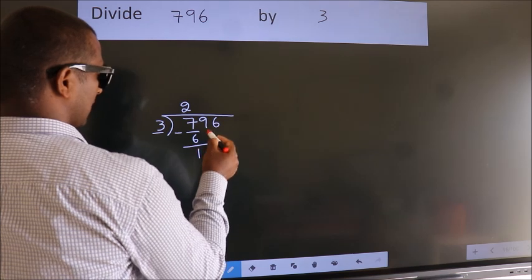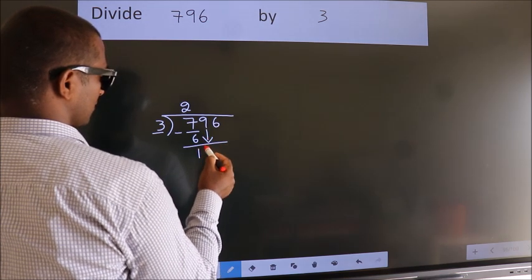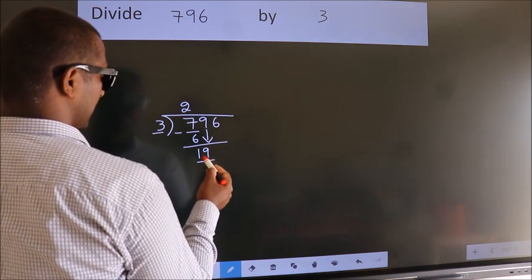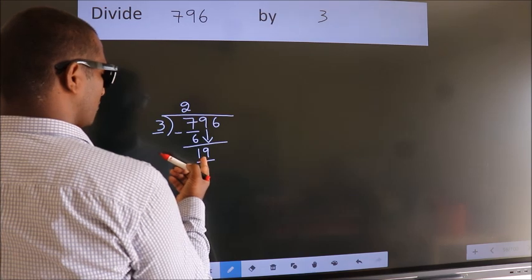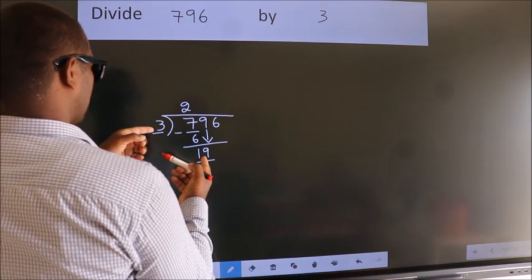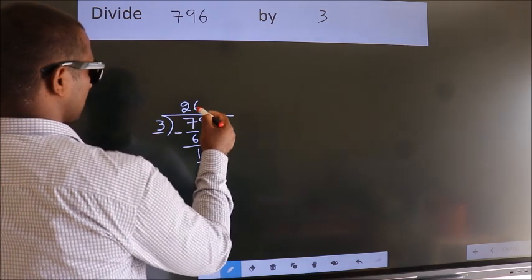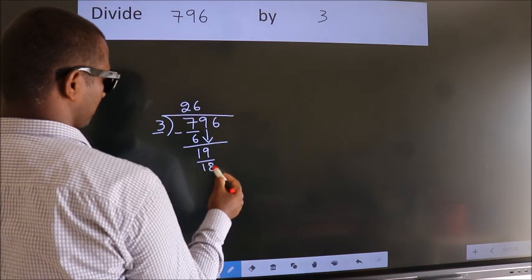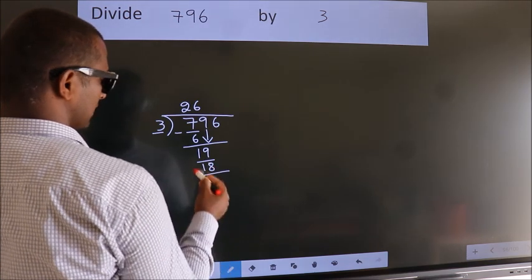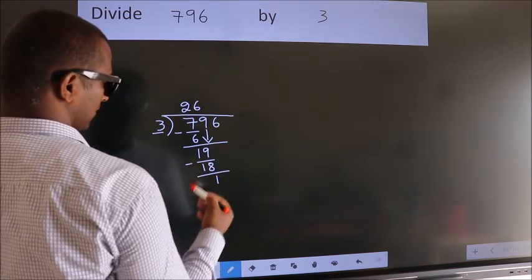After this, bring down the beside number. So 9 down, so 19. A number close to 19 in 3 table is 3 times 6 equals 18. Now we subtract. We get 1.